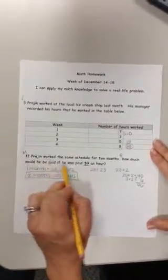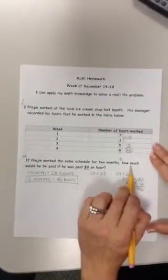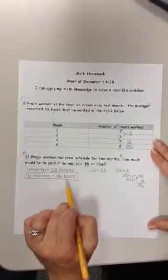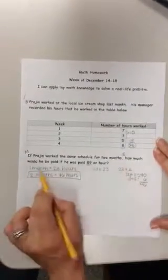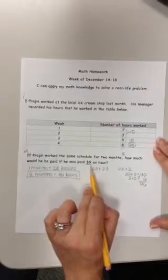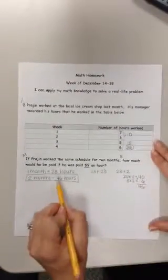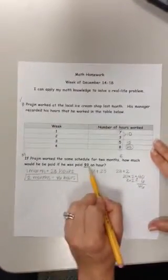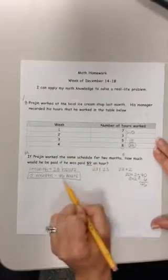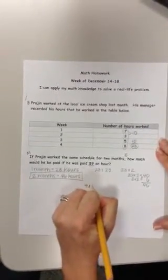So if Prejun worked the same schedule for two months, I know how many hours he worked—how much would he be paid if he was paid $9 an hour? So I'm going to take this total amount of hours and multiply it by 9, because every hour he worked, he was paid $9.